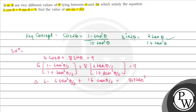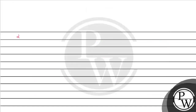After simplifying, we get: 15tan²(θ/2) - 16tan(θ/2) + 3 = 0. This is a quadratic equation — let's call this equation number two, and the original equation number one.